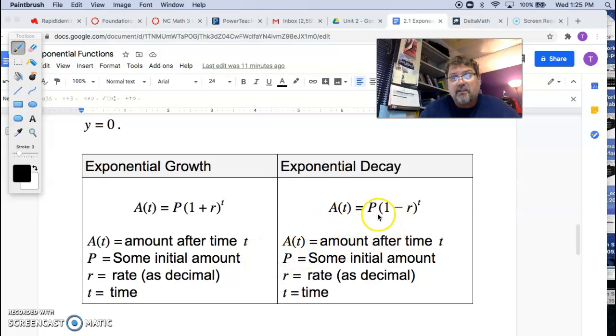Decay looks a lot like that. It's exactly the same formula, only it's 1 - r. Notice at any rate you get, this will become less than 1. Okay, that's why it will become exponential decay. All right, so growth is greater than 1. Decay, less than 1.